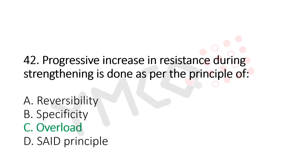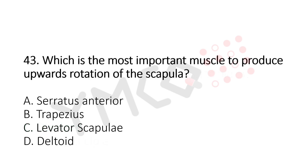Question number 43: Which is the most important muscle to produce upward rotation of a scapula? Option A, serratus anterior; Option B, trapezius; Option C, levator scapulae; Option D, deltoid. The answer is Option A, serratus anterior. In some textbooks, it's trapezius.